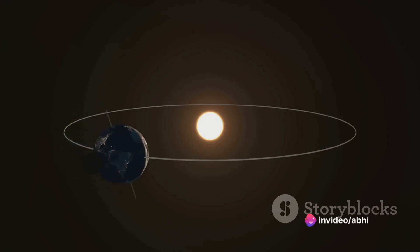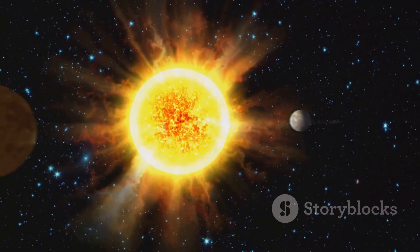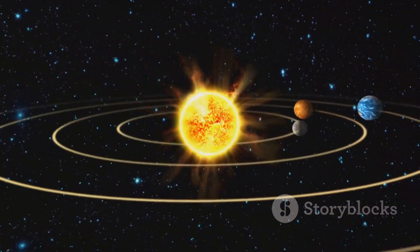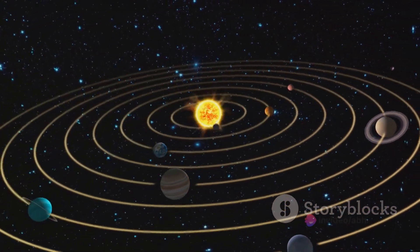Envision drawing an imaginary line from the blazing core of the Sun to this planet. This imaginary line, rather than being a static, unchanging link, is a dynamic connector that continuously shifts and moves, tracking the planet's celestial journey around the Sun.